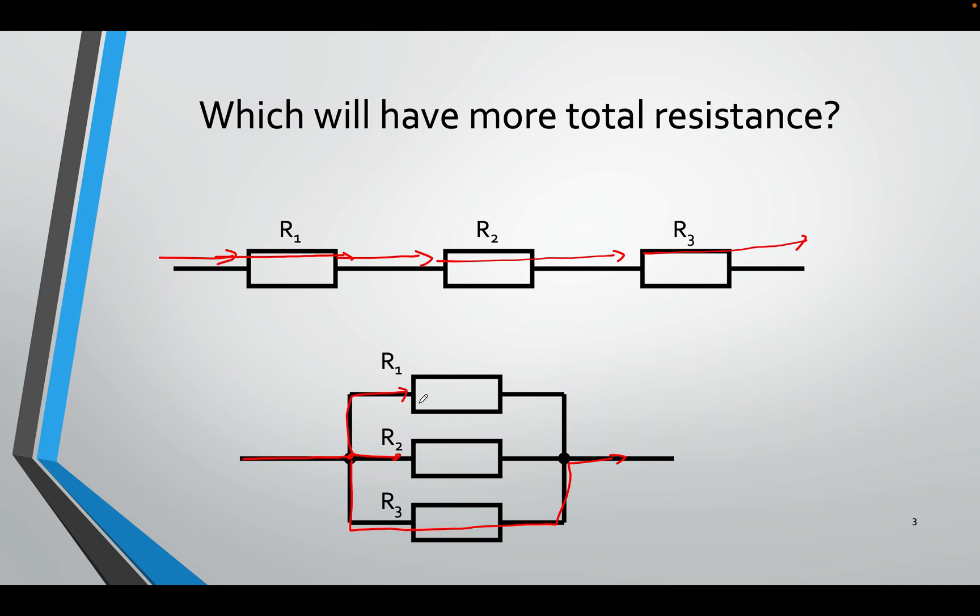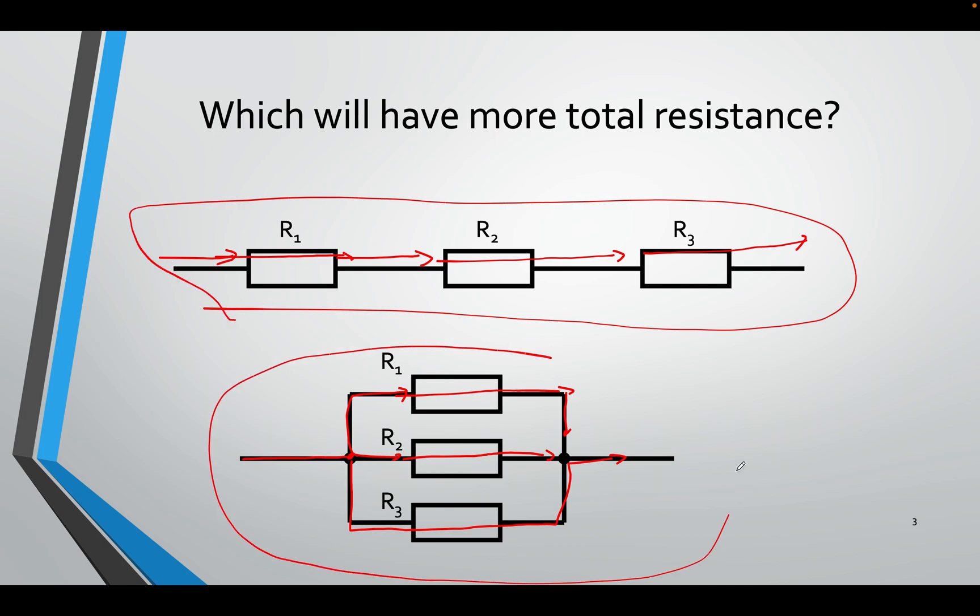That means the total resistance will actually decrease. The current will increase because it's easier for the current to flow through one resistor in each branch. So this one will have a greater total resistance. This one will have a lesser total resistance.